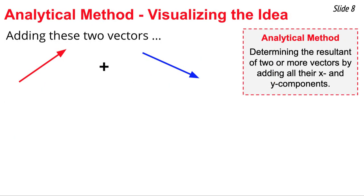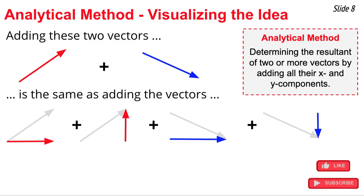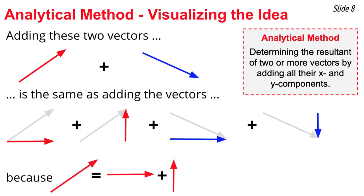Let's visualize why this analytical method works. We're going to add the red vector and the blue vector — neither lies along the traditional x-y axes. So we replace each vector with its x and y components: the red vector is replaced by two red components, and the blue vector by two blue components, and we add up these four components. This works because each angled vector equals the sum of its x and y components, so adding the four components is the same as adding the two non-perpendicular vectors.